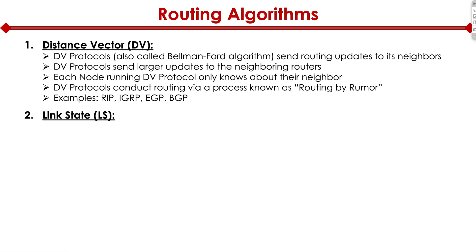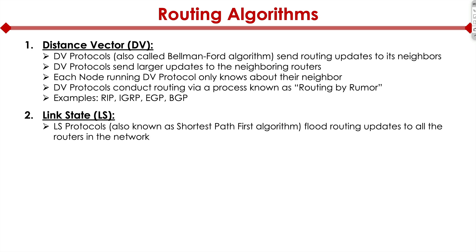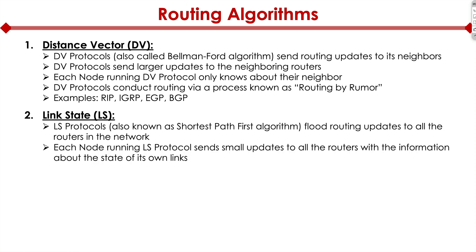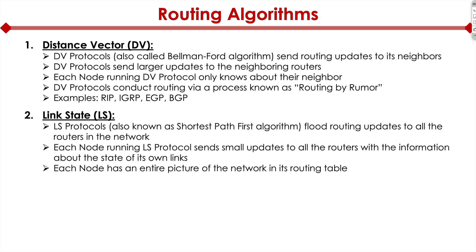Link state protocols, also known as shortest path first or SPF algorithms, flood routing updates to all the routers in the entire network. All the nodes and routers in the entire environment know about everybody else. Small updates are sent to the routers in link state because everybody knows about everybody already. Each node has an entire picture of the entire network. Examples include IS-IS and OSPF.